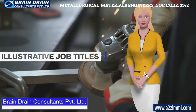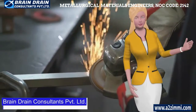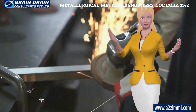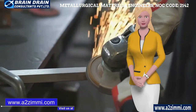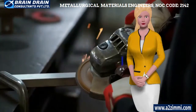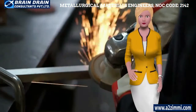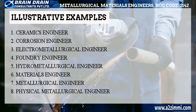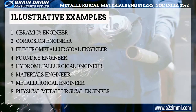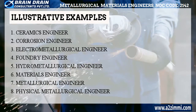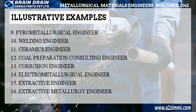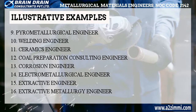Every job role or employment can have multiple profile titles, so if you are not able to find the exact job title for your profile, you need not worry. The list of illustrative and alternative titles for the profile of Metallurgical and Materials Engineers includes: Ceramics Engineer, Corrosion Engineer, Electro-Metallurgical Engineer, and Foundry Engineer, among others. The list is quite large, so you can pause this video to read all the alternative profile titles.